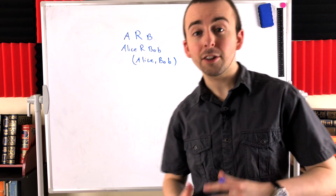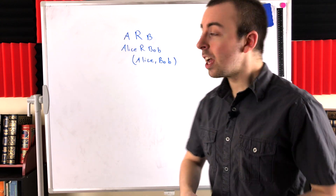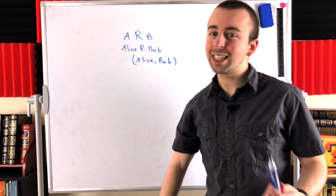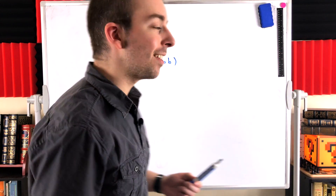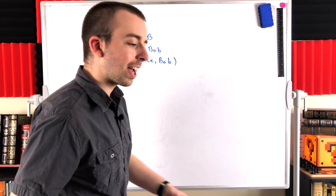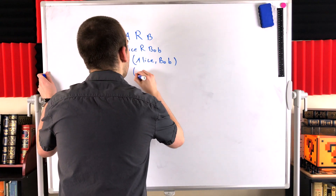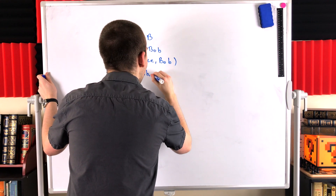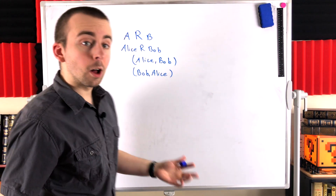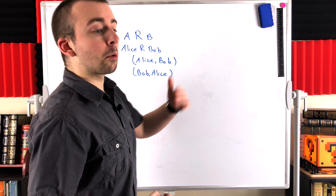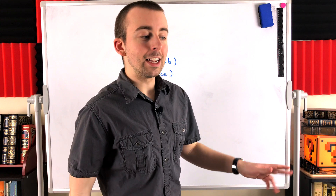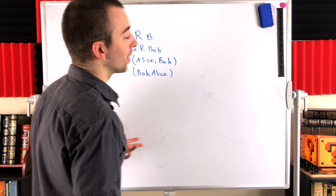This relation has a special property called the symmetric property, where any time A relates to B, B also relates to A. Because if Alice has shaken Bob's hand, Bob must also have shaken Alice's hand. So Bob relates to Alice, and we could represent that with the ordered pair (Bob, Alice). Of course, not all relations have this property. For example, my relation to my mother is that I am her son, but my mother is not my son. So not every relation is symmetric.